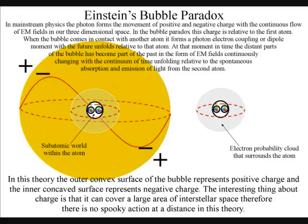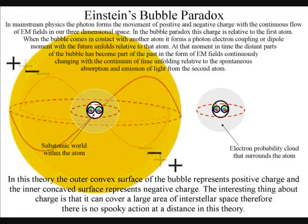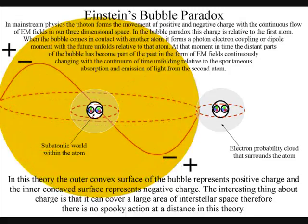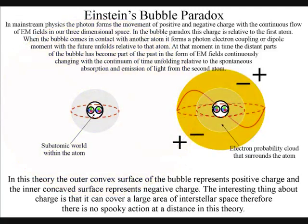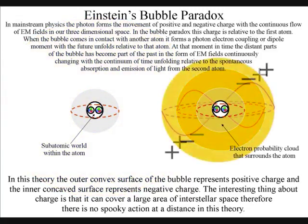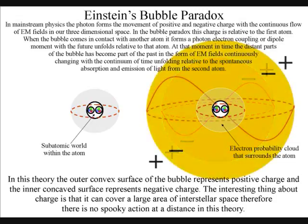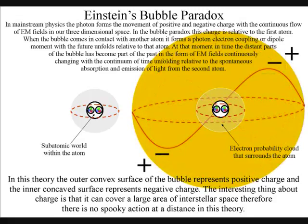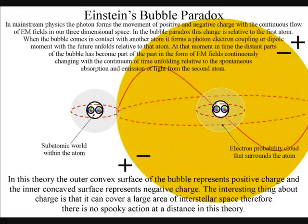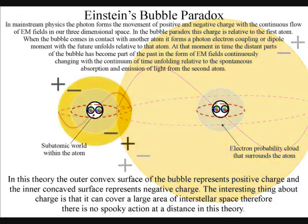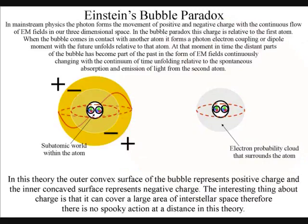When the bubble comes in contact with another atom, it forms a photon-electron coupling or dipole moment with the future unfolding relative to that atom. At that moment in time, the distant parts of the bubble have become part of the past in the form of electromagnetic fields continuously changing with the continuum of time, unfolding relative to the spontaneous absorption and emission of light from the second atom.